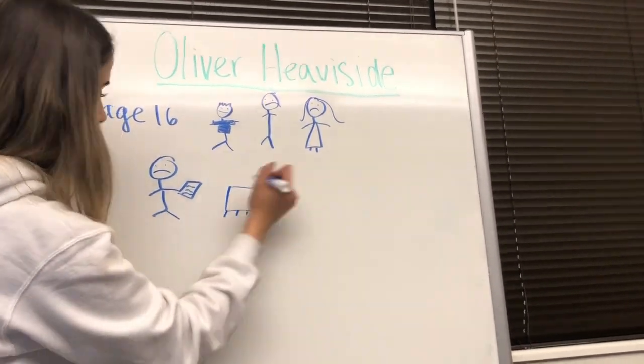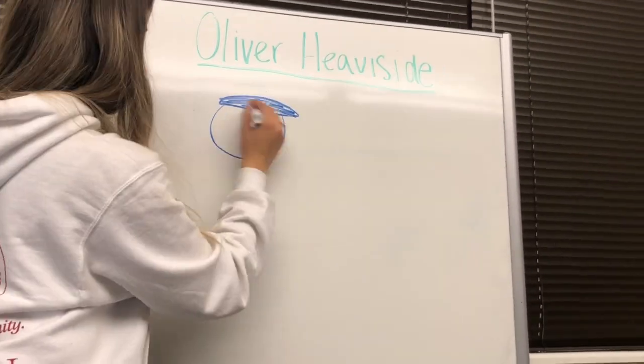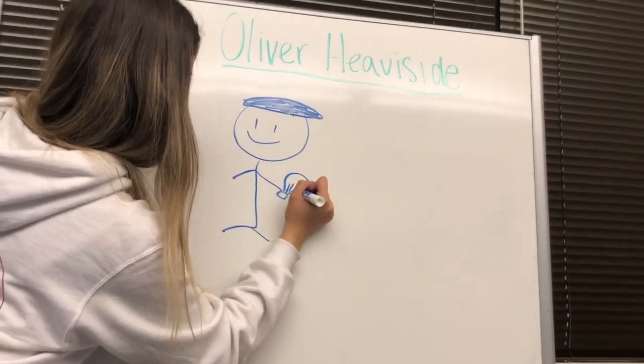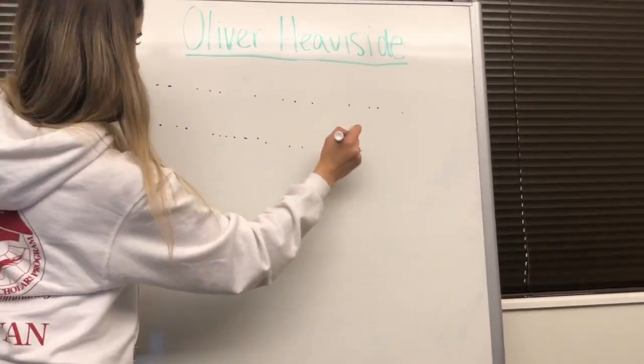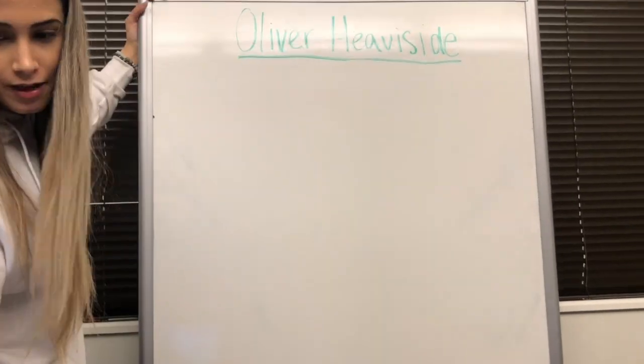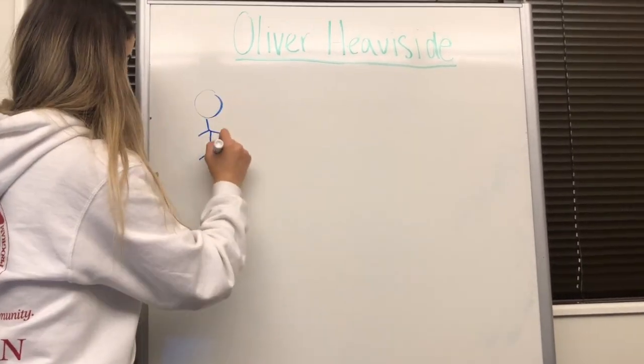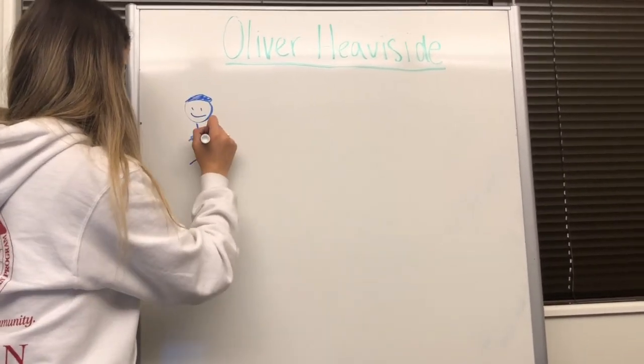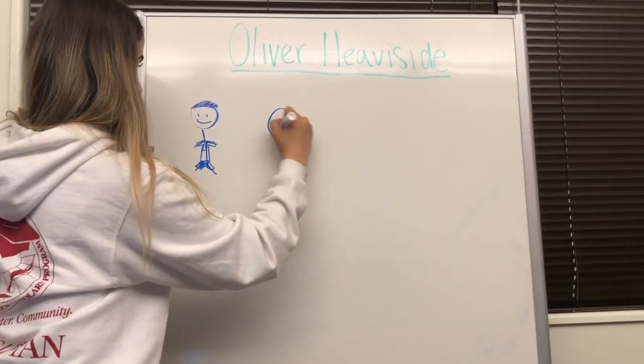This was his last formal education. He later became an electrician at the Danish Great Northern Telegraph Company. He learned Morse code and studied electricity and languages, and was appointed Chief Telegraph Operator in 1870.